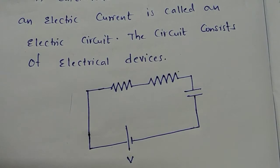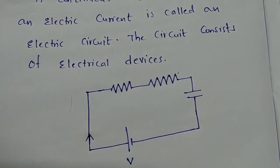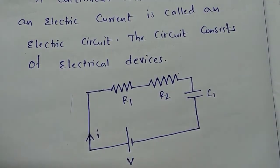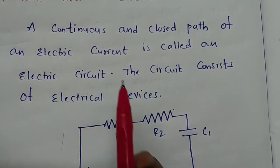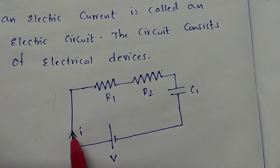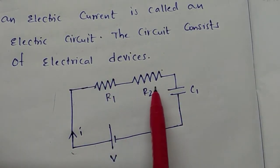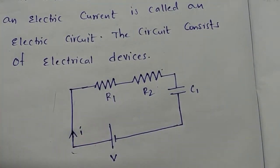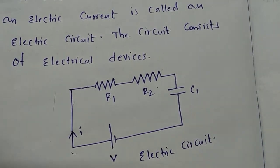This is the source which is having voltage V, and the current will flow from the positive terminal to the negative terminal. This is the direction of the current. Let me take this as R1, R2, and C1 with the capacitance. A continuous and closed path of electric current is called an electric circuit. The electric current is continuously flowing in a closed path, and this path has electrical devices like R1, R2, capacitance, and the source. This total we can call an electric circuit — an example of an electric circuit.